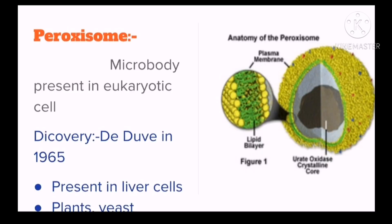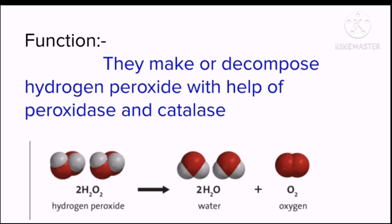Here is the first type of microbody, called the peroxisome. It gets its name from its function — they make peroxide, which is H₂O₂. They are present in all eukaryotic cells, which include animal, plant, yeast, and many others. They were discovered by De Duve in 1965. They are surrounded by a single membrane having oxidative enzymes in their matrix, such as peroxidase, catalase, and D-amino acid oxidase.